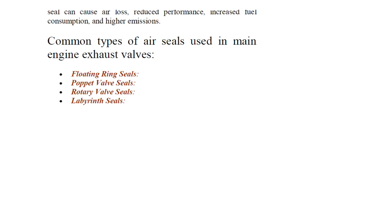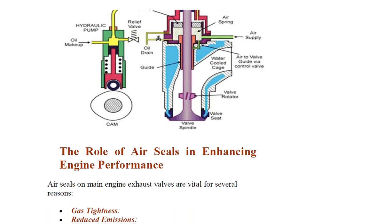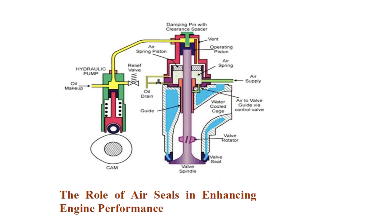Looking at the diagram of the exhaust valve assembly, you can see the pump, the cam, and the rollers at the top of the main engine. We also see the vent, the operating piston, air springs, air supply, and air to valve guide via control valve. There is also a water-cooled cage and a valve rotor visible in this cross-section.